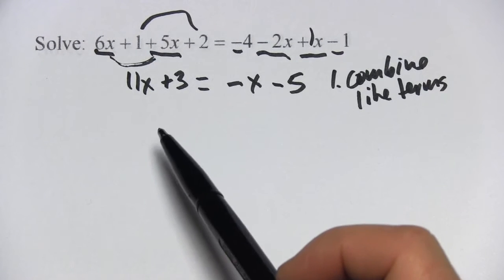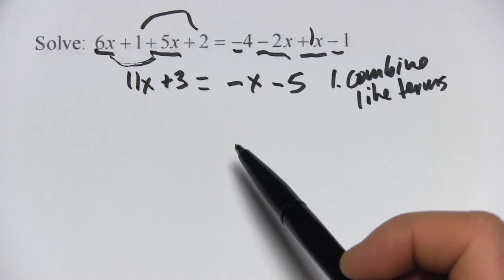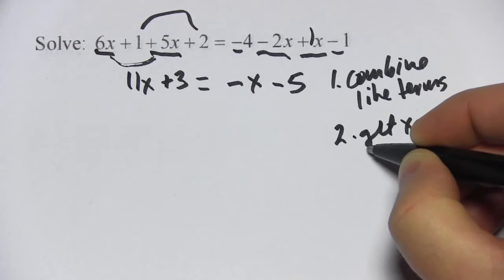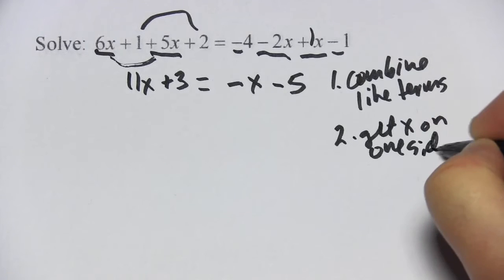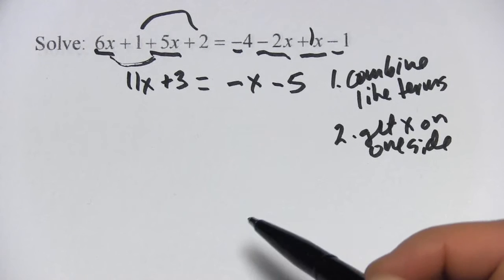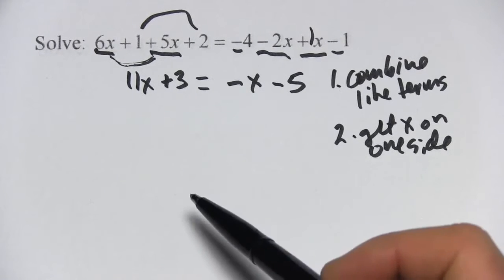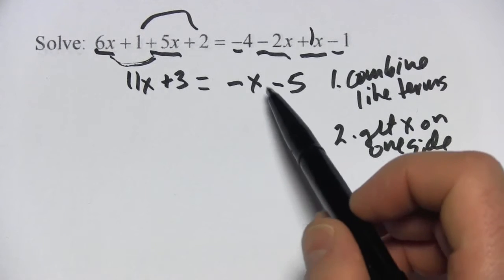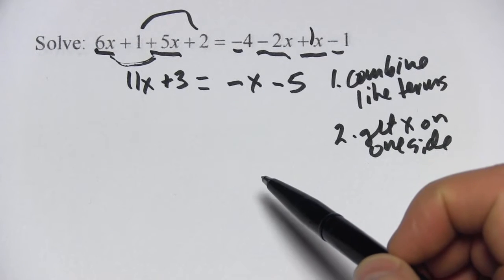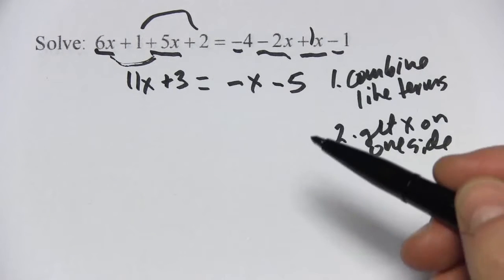The next step here is we have to deal with this problem that we have x's on both sides of the equation. So we want to get the x on just one side. You can do this by adding or subtracting the x's from one side of the equation. If I wanted to get rid of this 11x, I could subtract 11x. If I wanted to get rid of this negative 1x, I could add 1x and that would make that disappear.